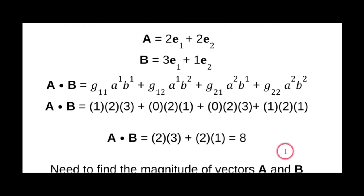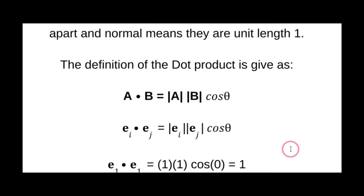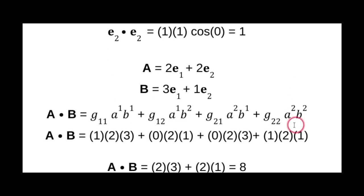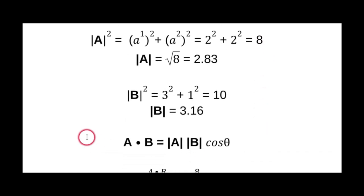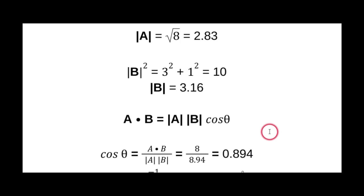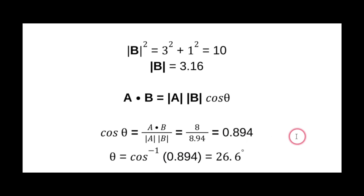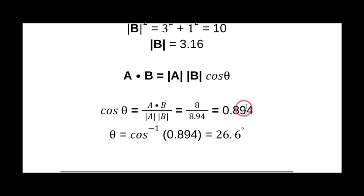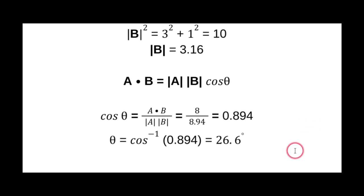Using the dot product definition a·b = |a||b|cos(θ), we have everything we need. We found the dot product is 8, and the magnitudes are 2.83 and 3.16. Solving for cos(θ) = 8/(2.83×3.16), then taking the inverse cosine, we get an angle of 26.6 degrees between the two vectors. That's a good place to stop — next time we'll get into something a little more complicated.